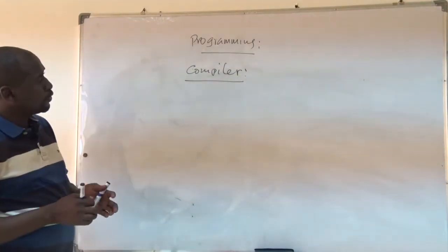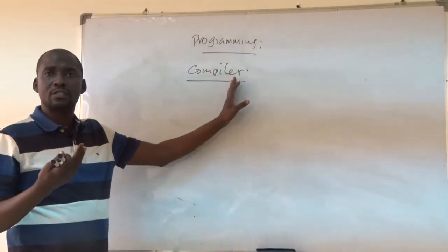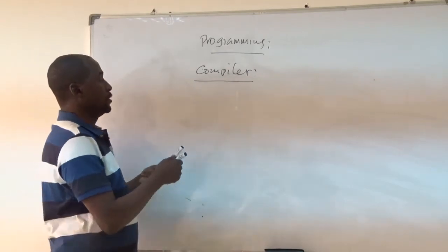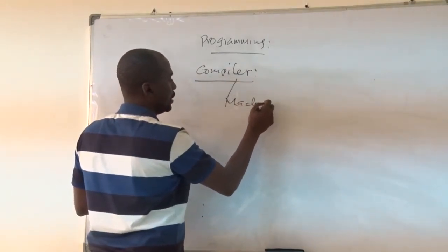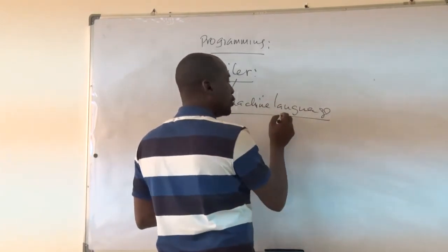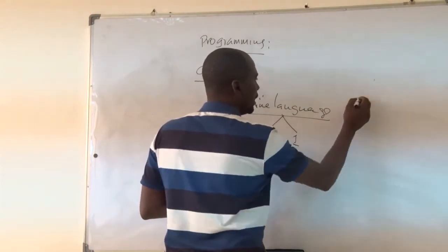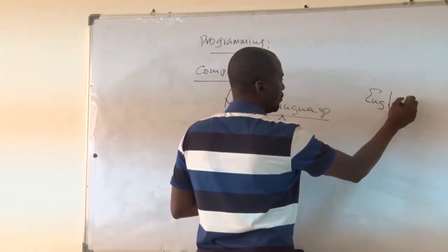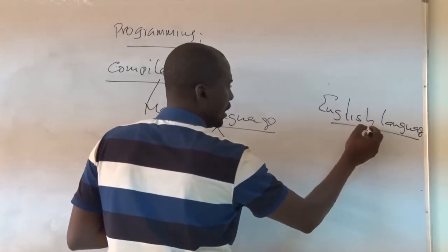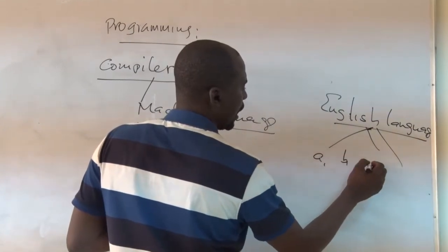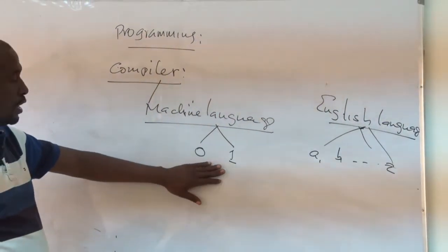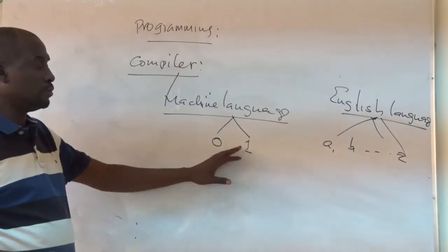A computer has its own language, known as machine language. This language has only two alphabets: zero and one. Just like English has 26 alphabets from A to Z, machine language — the language of the computer — has only two alphabets, zero and one, representing low and high.